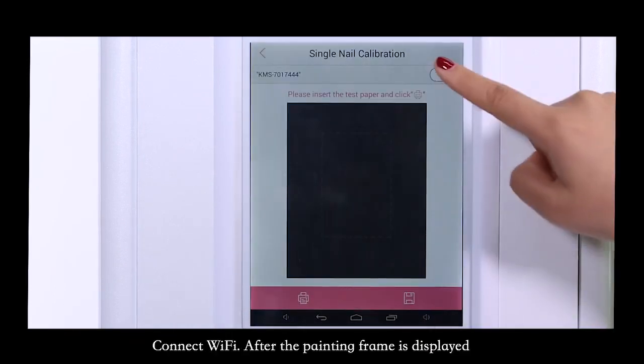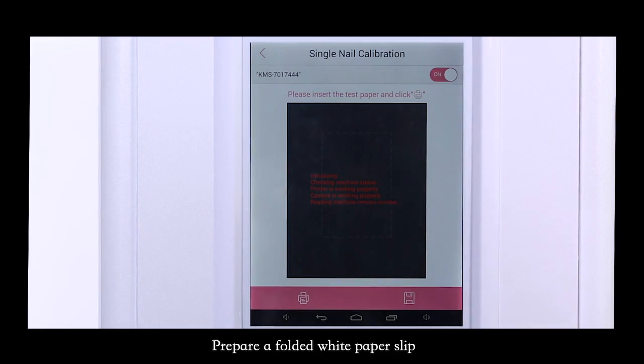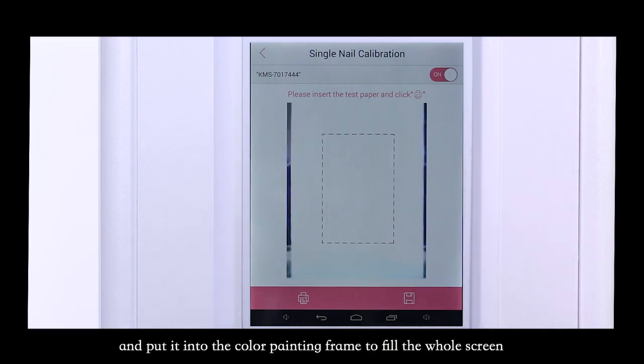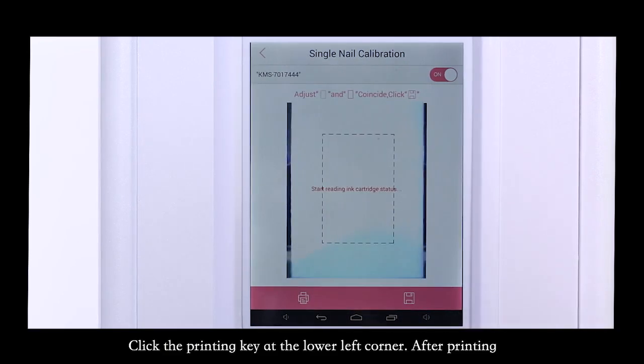After the painting frame is displayed, prepare a folded white paper slip and put it into the painting frame to fill the whole screen. Click the printing key at the lower left corner.